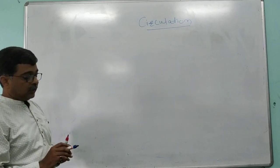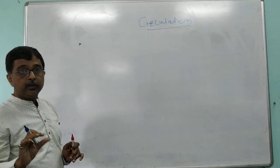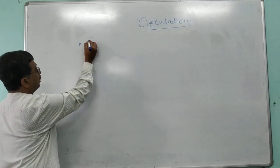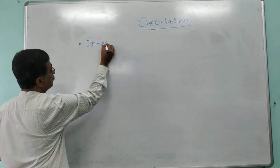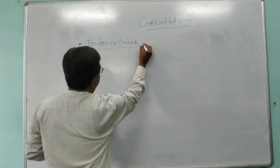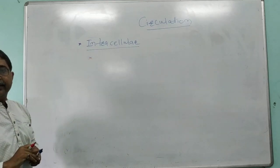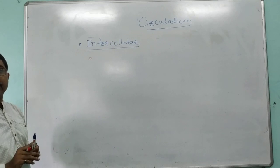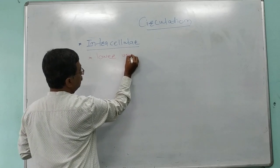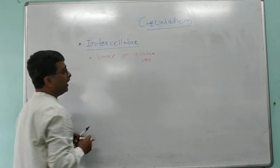This process of circulation is classified into two different categories. The first type of circulation is called intracellular circulation, which is observed in lower and unicellular organisms like Amoeba and Paramecium.